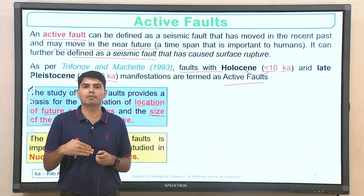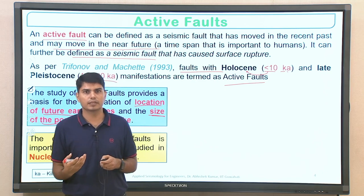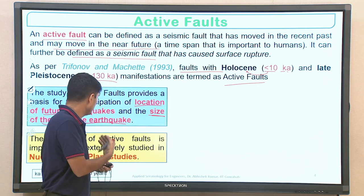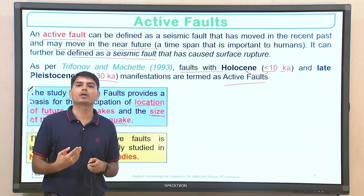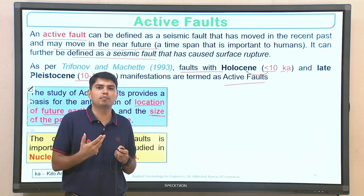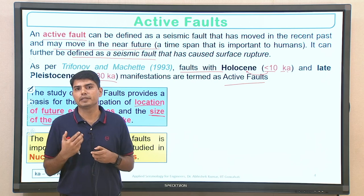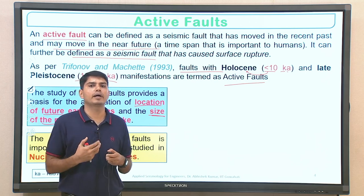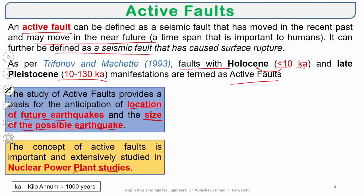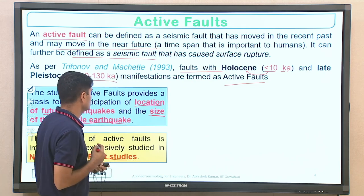Unlike routine structures, whenever we are going for hazard analysis of a nuclear power plant, one has to take into account what are the active faults available in a particular region based on existing studies, and if possible a separate detailed study related to identification of active faults in a particular region can also be parallelly taken into account. Ka is kilo annum — 1 Ka means 1000 years.